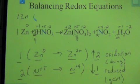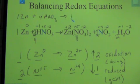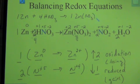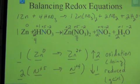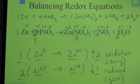Our balanced equation is: 1 Zn + 4 HNO₃ → Zn(NO₃)₂ + 2 NO₂ + 2 H₂O. We balanced this redox reaction by assigning oxidation numbers and balancing the gain and loss of electrons.